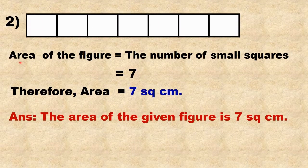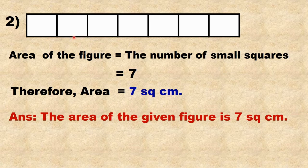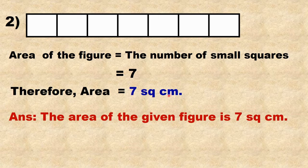Next example: the area of the figure equals the number of small squares. It is divided into squares with side 1 cm. Count the number of squares: 1, 2, 3, 4, 5, 6, 7. There are 7 squares. Therefore, area = 7 square cm. The area of the given figure is 7 square cm.